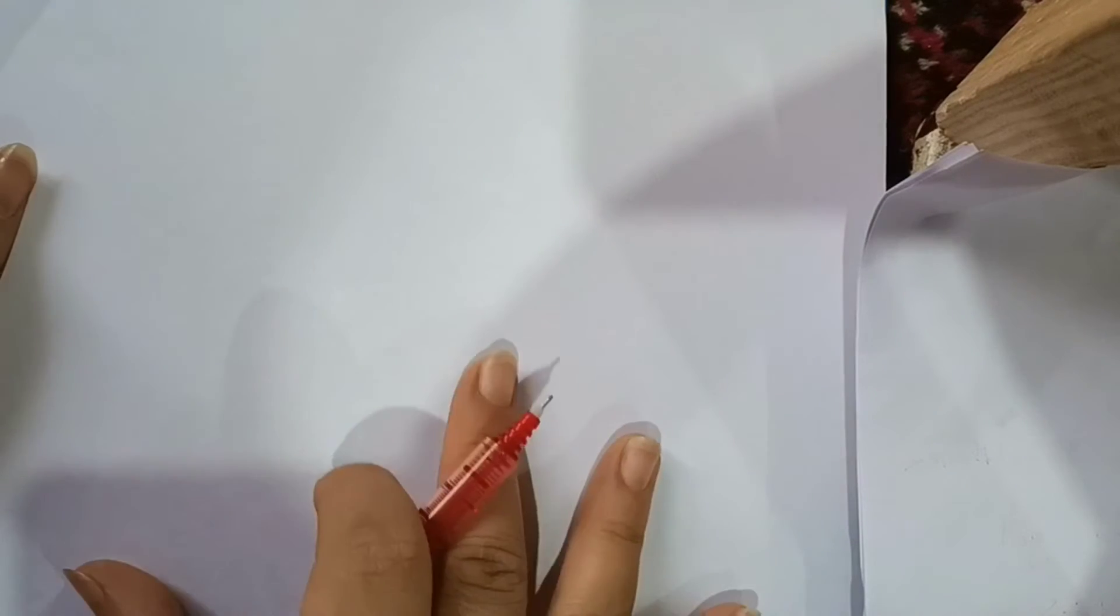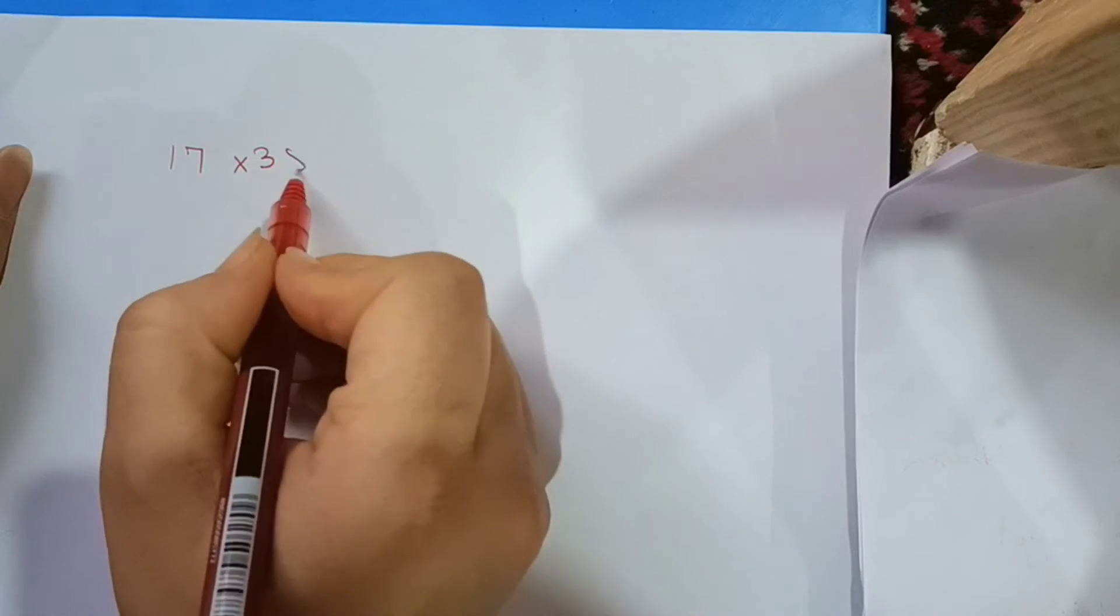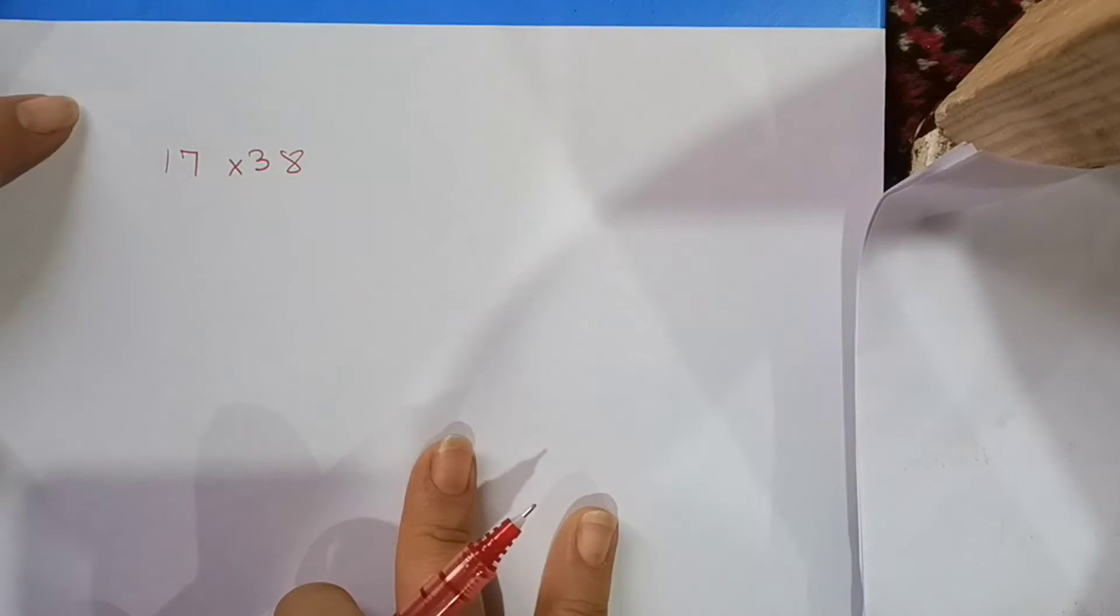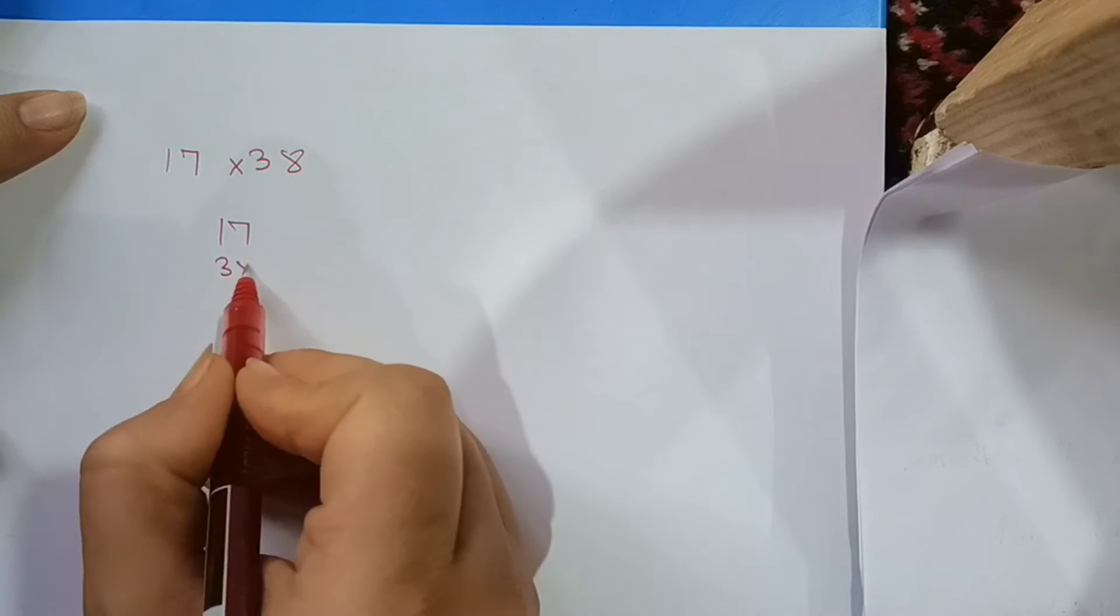We will do 2-digit numbers. We have distributive property of multiplication. We will do 2-digit numbers. Let's start. Suppose you have 17 into 38. How do you do? We will do 2-digit numbers, 17 into 38.